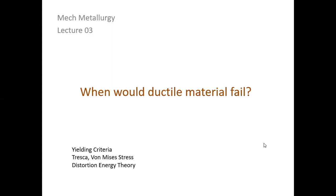This is the third lecture of mechanical metallurgy. In the first lecture, we saw stress and strain. In the second lecture, we saw complex stresses. We saw the plane strain and plane stress conditions. We saw the structure of the circle.